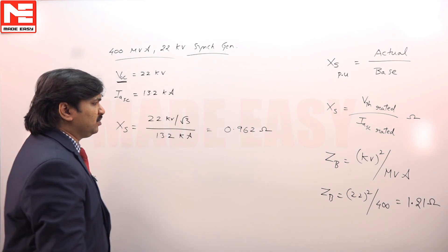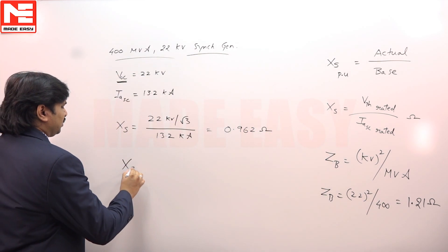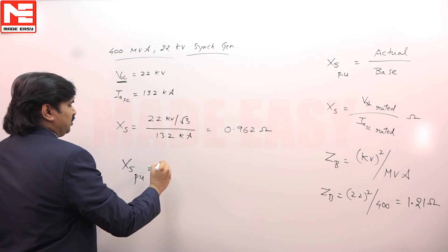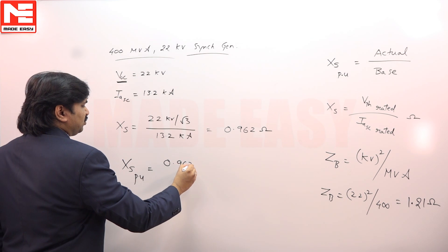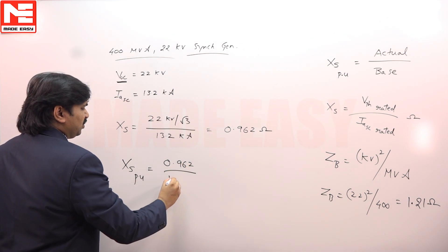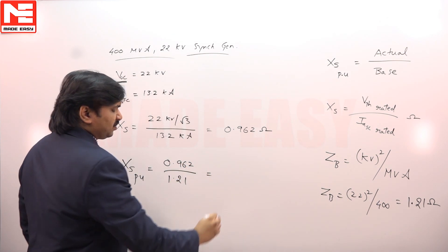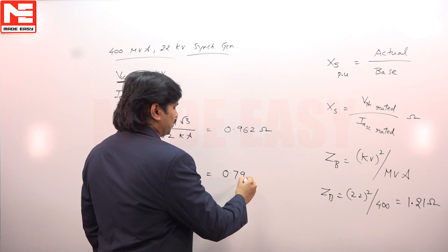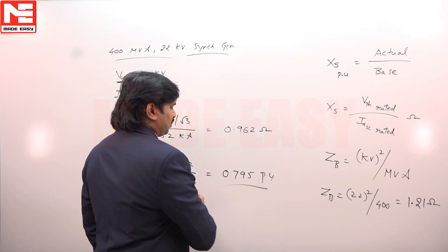Therefore, excess per unit is equal to actual value 0.962 divided by base value 1.21.